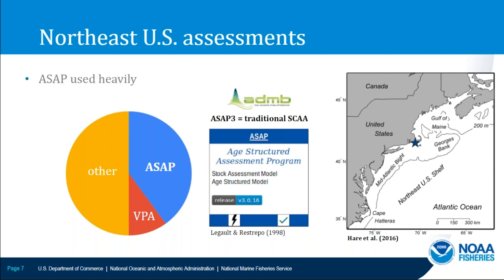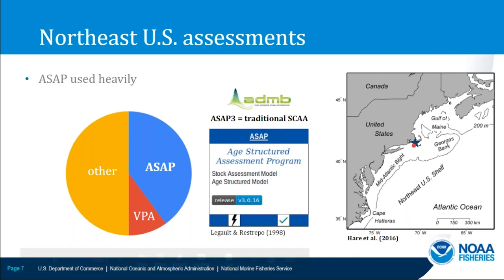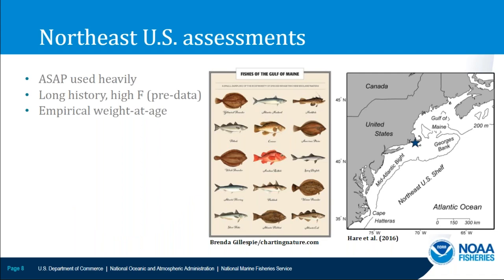Tim and I are working at the Northeast, so it's useful to have background on assessments there. The Northeast Center is responsible for assessing fish stocks from Cape Hatteras up to the Canadian border, here in Woods Hole. About half of the assessments are age-based, and of those the majority use ASAP — the Age Structured Assessment Program — written in ADMB. Many of the assessed stocks are groundfish with a few pelagics, with a long history of high fishing mortality. Many assessments use empirical-weighted age data, in contrast to the West Coast where growth is often fit within the model.